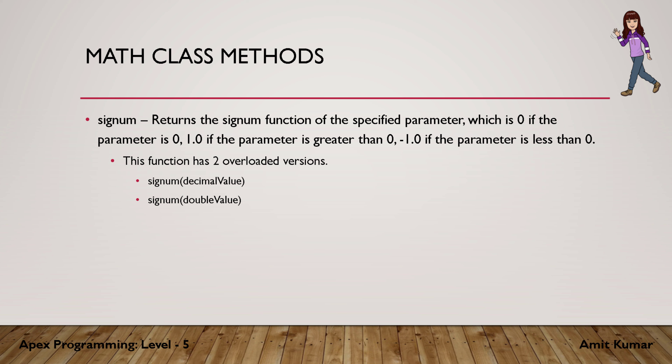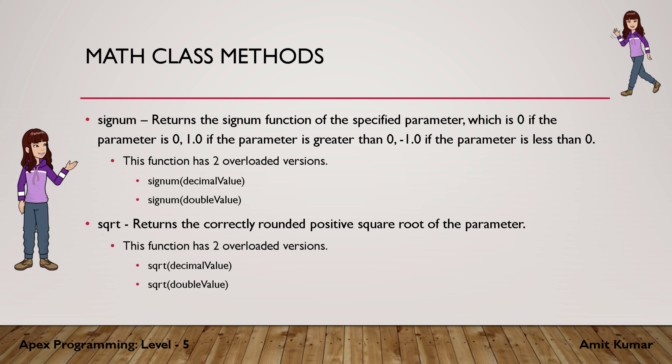signum returns the signum function of the specified parameter. If the parameter is 0 it returns 0; if greater than 0 it returns 1.0; and if less than 0 (a negative number) it returns minus 1.0. It has two overloaded versions: decimal and double.